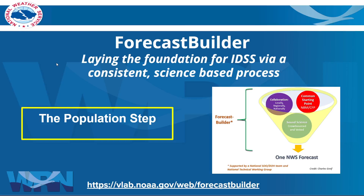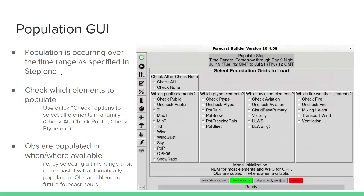Welcome to the population step, step number two in Forecast Builder. Population is occurring over the time range as specified in step one, and there are many options to choose which elements to populate.